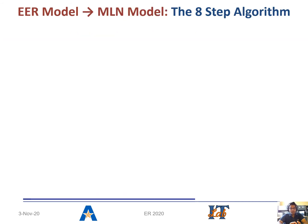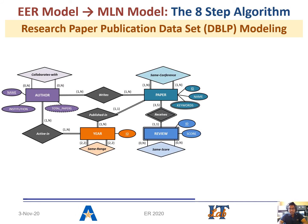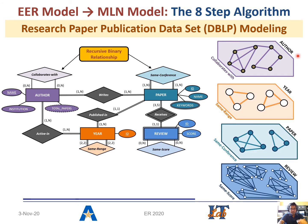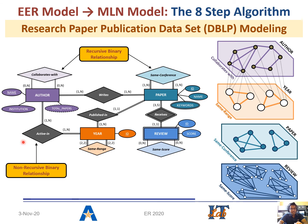Here we briefly illustrate how different components of an ER model are translated into the different components of the MLN model. We begin with the ER model for the DBLP scenario presented earlier. The first step is to focus on the recursive binary relationships that lead to the generation of the layers in the MLN. For example, the 'collaborates with' relationship will generate the author layer, where each author instance will generate the nodes and the relationship between author instances will generate the intralayer edges. Similarly, we generate the year layer, paper layer, and review layer. Next, we focus on the non-recursive binary relationships that will generate the interlayer edges. For example, the 'active in' relationship between the author and the year instances will generate the interlayer edges between the author nodes and the year nodes.